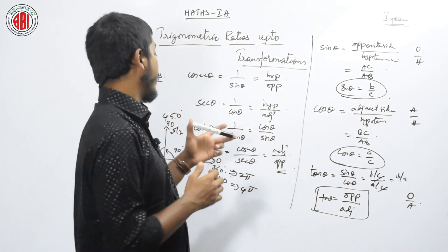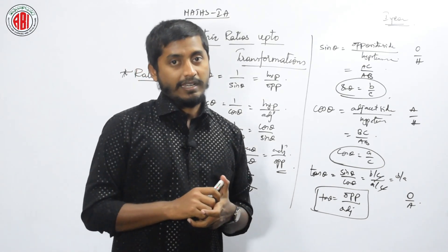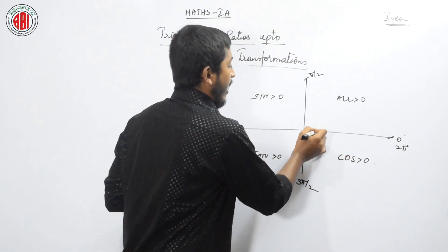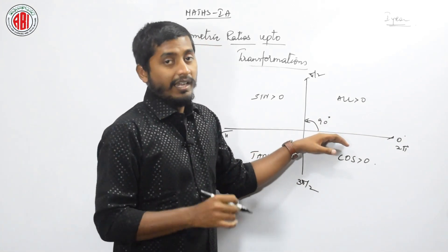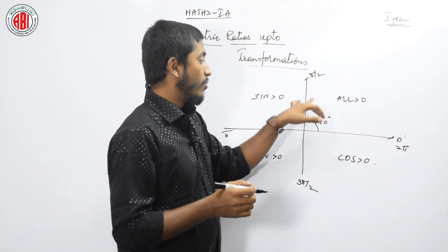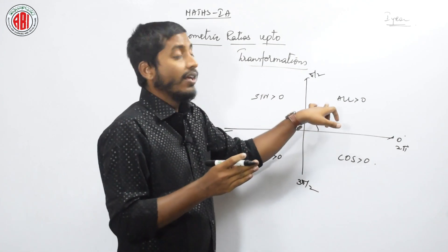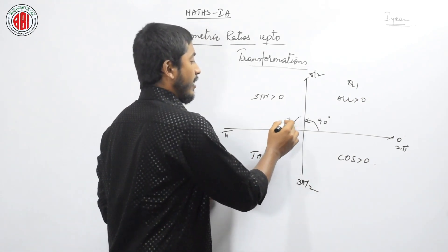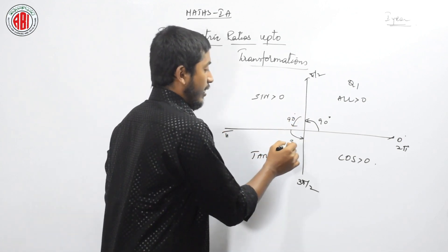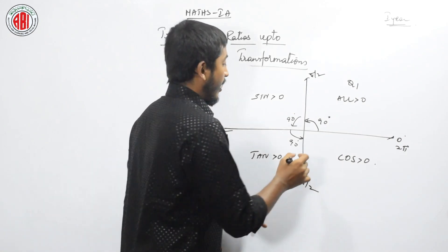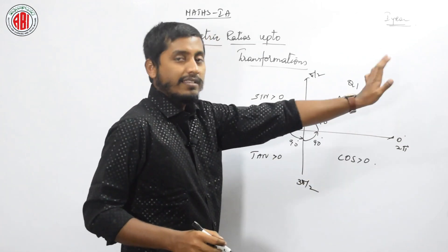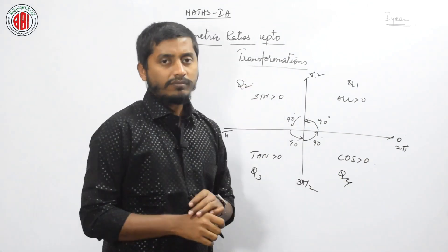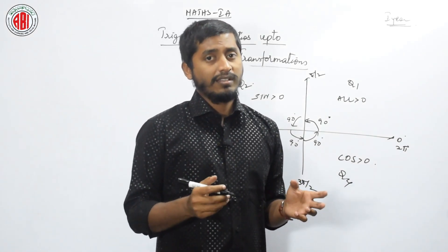Let us check the measurement of sin in the first, second, third, and fourth quadrants. This consists of 4 quadrants where initially the ray is at angle 0. If it rotates anticlockwise by 90 degrees from the positive x-axis, and the angle increases from 0 to 90 degrees, that will be the first quadrant. In the first quadrant, all the ratios are always positive — sin, cos, tan, cosecant, secant, everything.